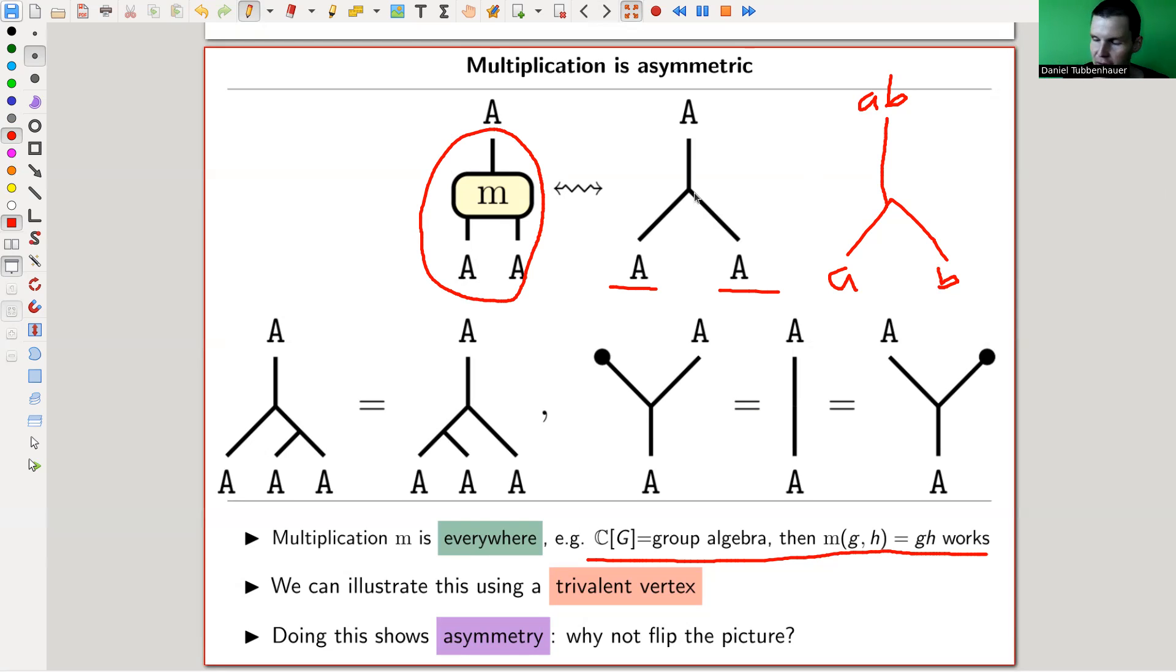And you can, so I call this a trivalent vertex, for the obvious reason that it's kind of trivalent, I guess. Anyway, so you can then write down the natural axioms. So associativity, for example, if you just think about it. So this picture here is something like A, B, C. And you merge first B and C, and have still your A around. So it's kind of a bracketing like this. And then you go to A, B, C.